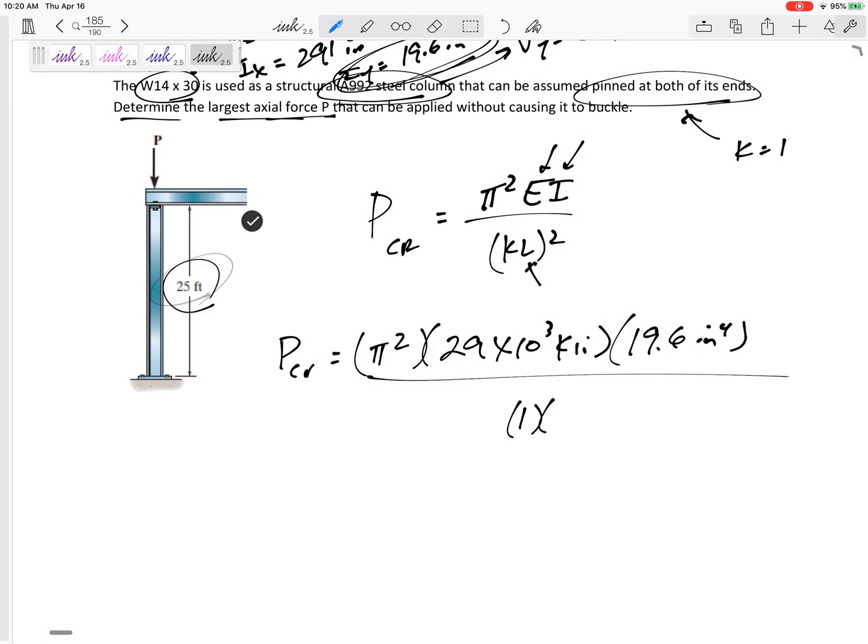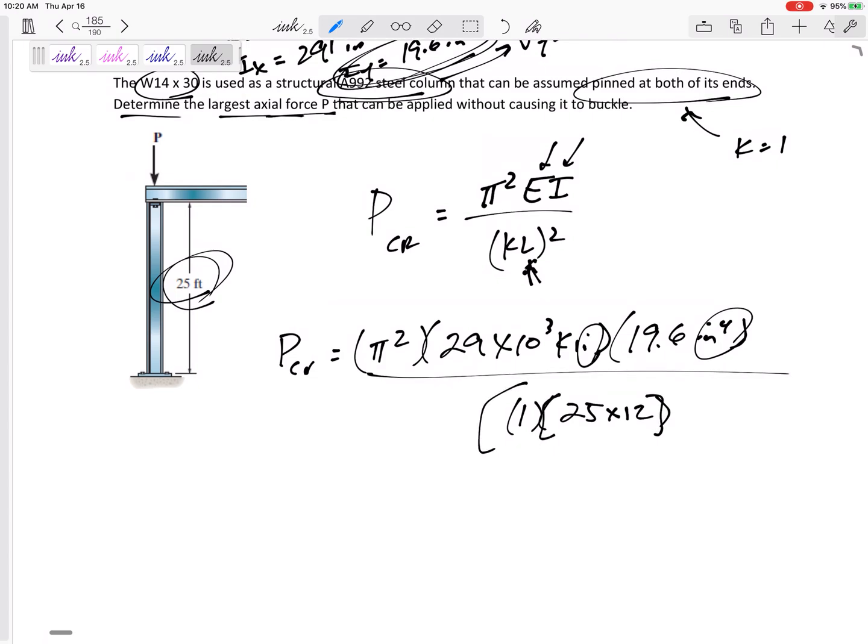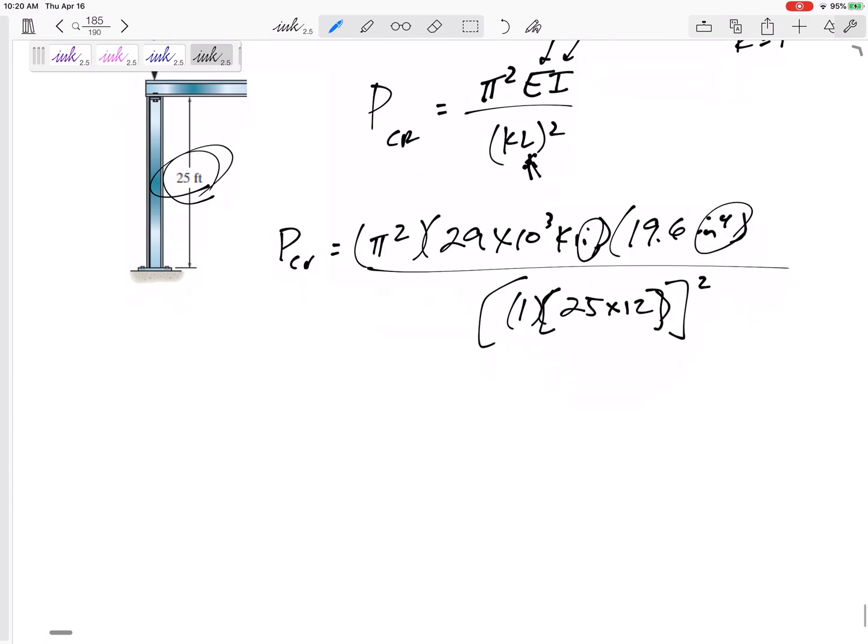Now, I am looking at all this kips per square inch, inches to the fourth. I need inches squared on the bottom. So, 25 feet times 12, that would be how many inches. All right, and that KL value squared.